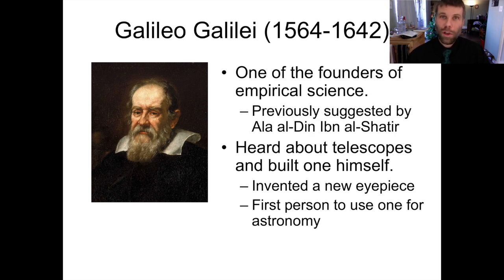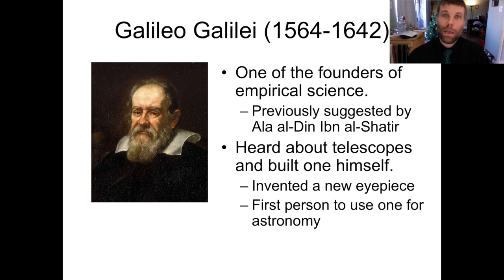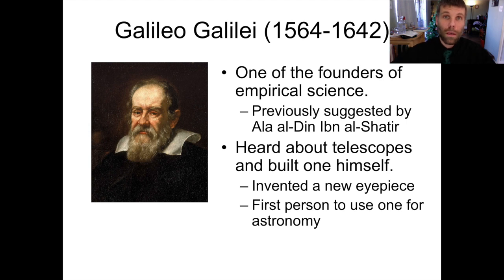Galileo heard about the telescope that had been invented by Lippershey and built his own, which he then showed off to his colleagues at the university. After a little while, he realized he could use his spyglass not just to look at pirate ships off on the horizon, but also to do astronomy. Galileo is the first person recorded to have turned a telescope towards the sky and used it to study the universe. He made a number of really important discoveries — for example, he figured out that the Milky Way is actually a collection of billions of stars too faint to resolve by the human eye. But I'm going to focus on his four discoveries that are directly relevant to the structure of the solar system as it pertains to the heliocentric revolution.